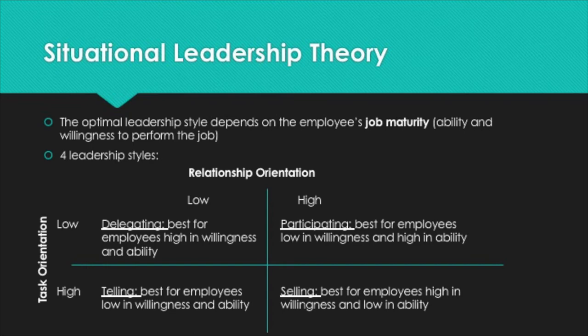The participating leadership style is best when employees are low in willingness but high in ability — they're fully capable but not motivated, so you have to participate with them or else they won't get anything done. The selling leadership style is best when employees are high in willingness but low in ability — they're motivated but don't fully know what to do, so you have to sell them on it by explaining task instructions in a persuasive manner.